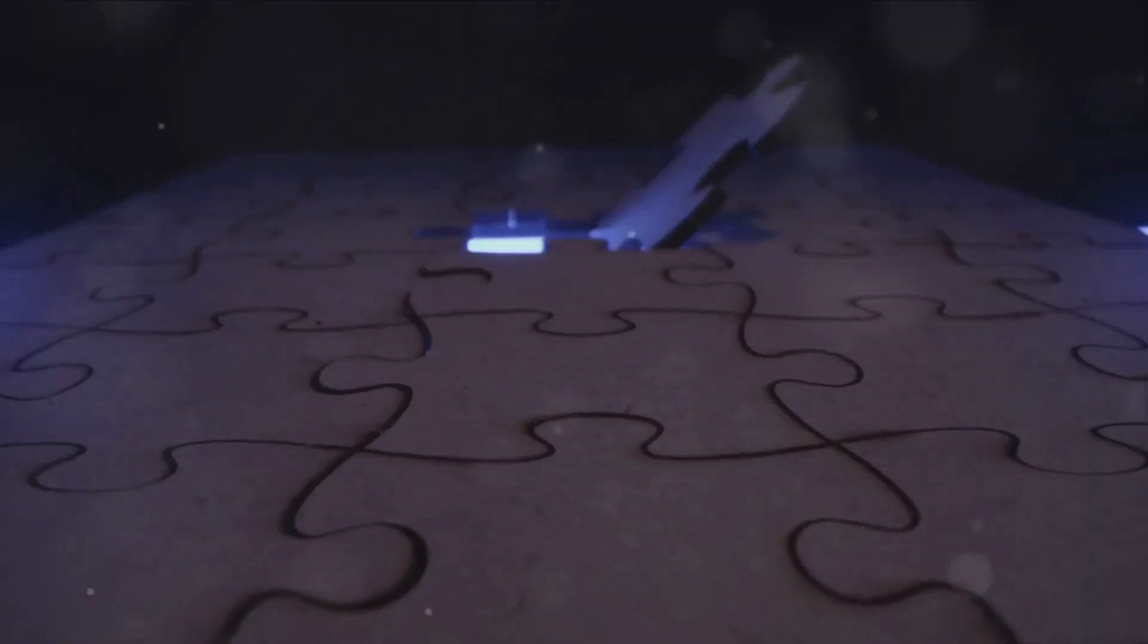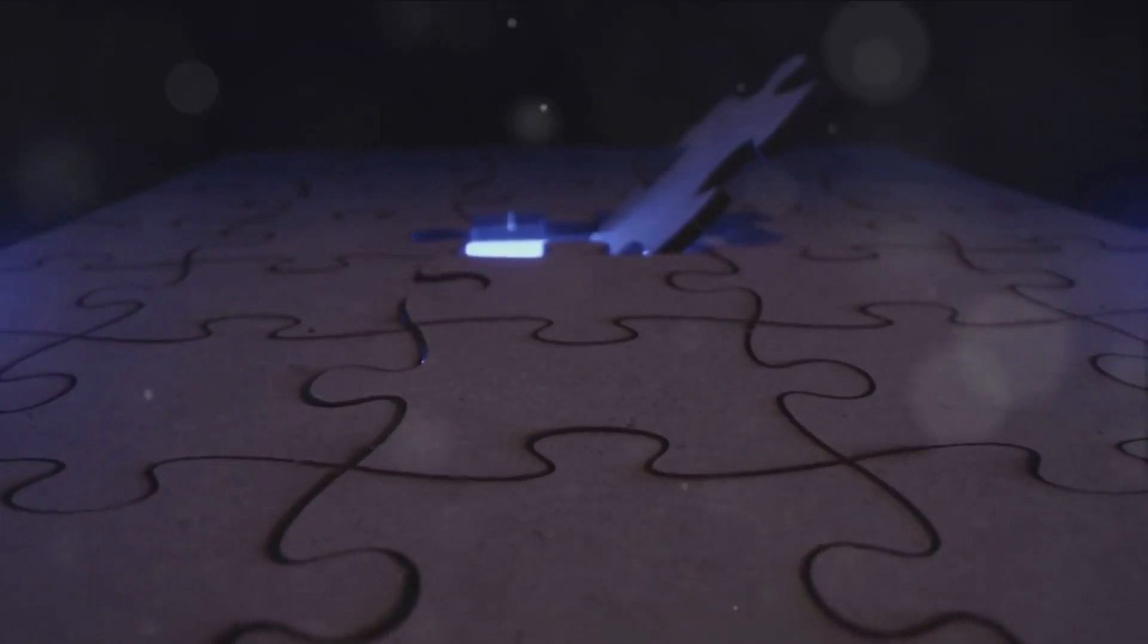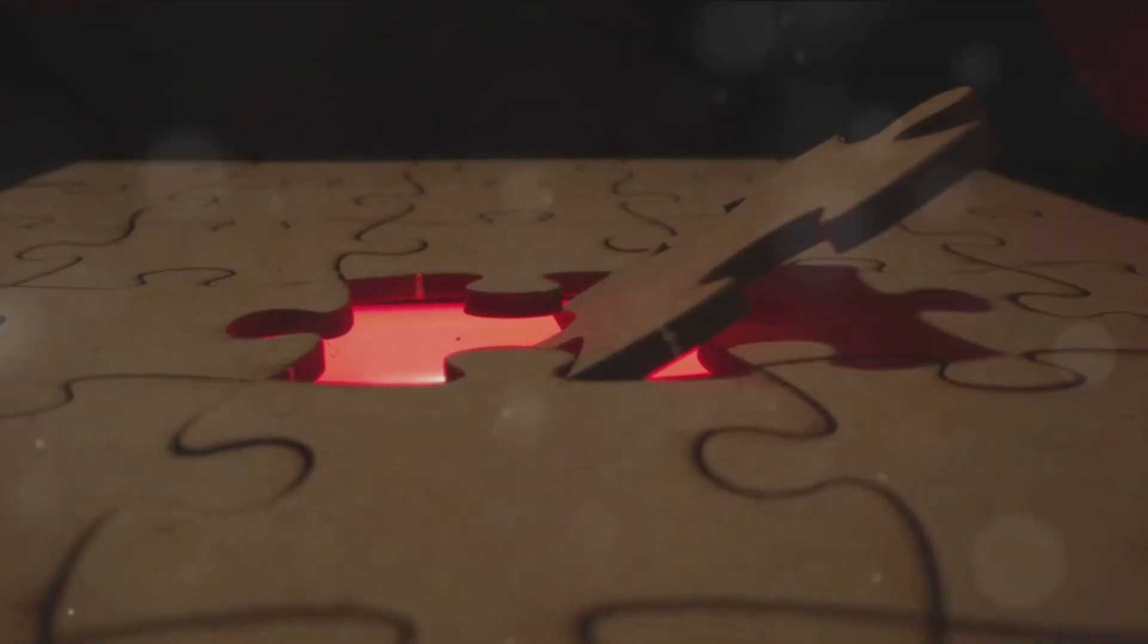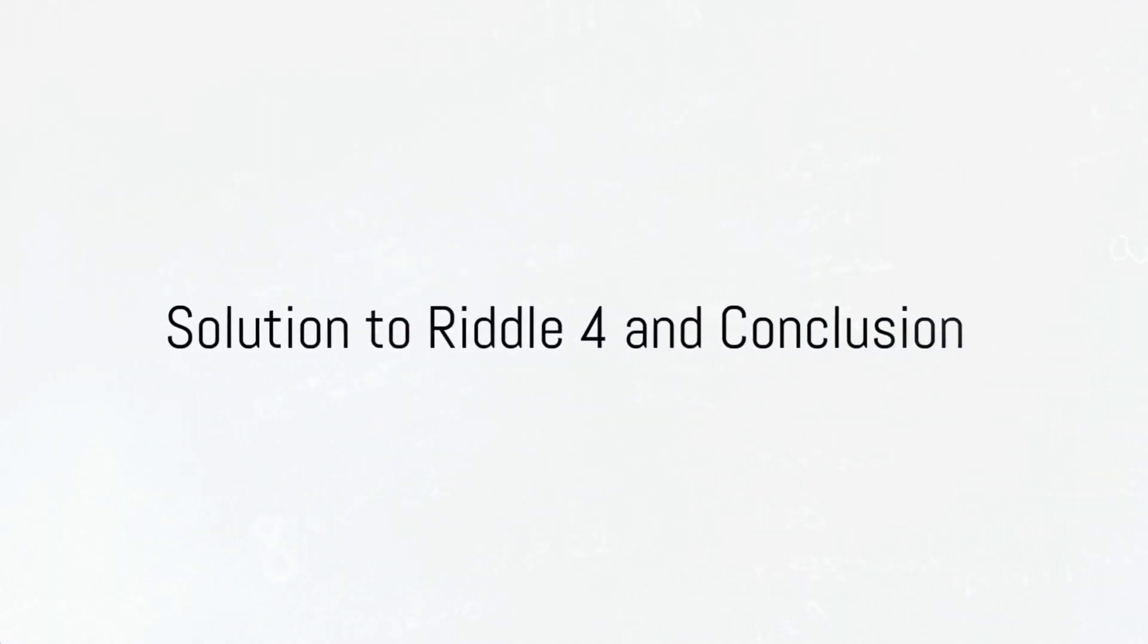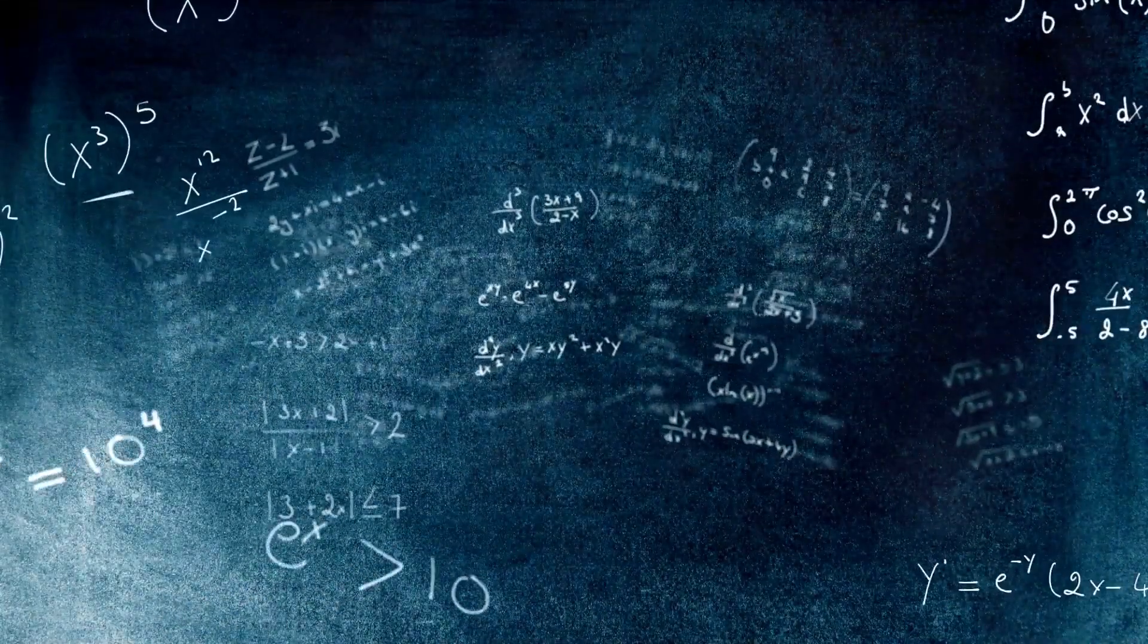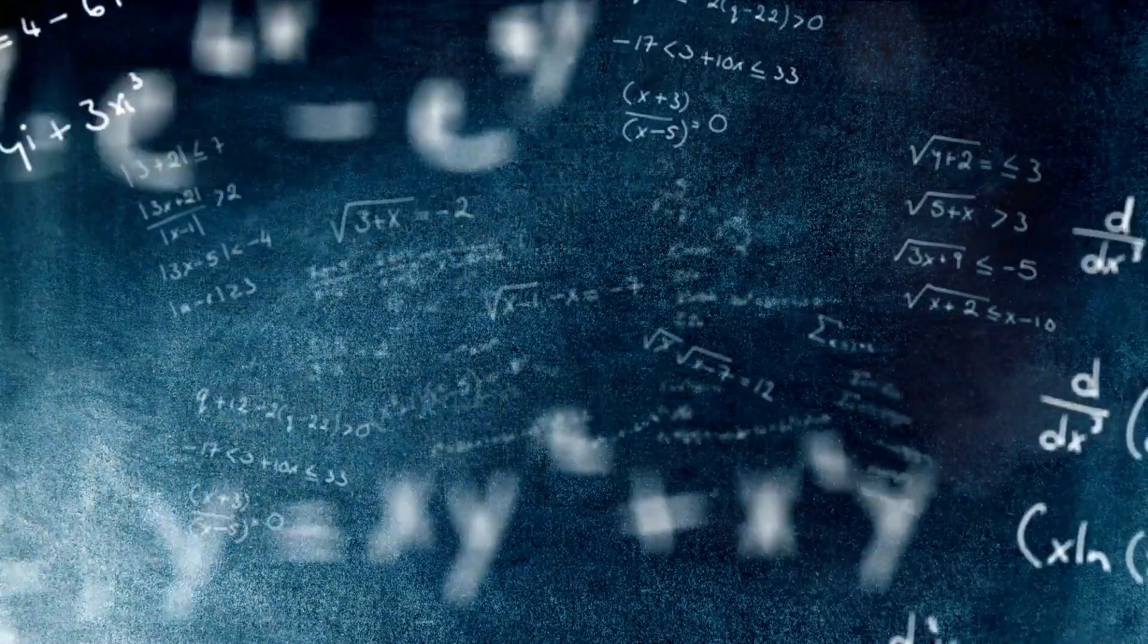Now for our final puzzle: the Missing Number Grid. We have a series of rows with numbers, but one is missing. Can you figure out the missing number? The missing number in the grid is six. The pattern is simple: add the first two numbers and subtract the third. So two plus nine minus what equals six? That's right, the missing number is six.